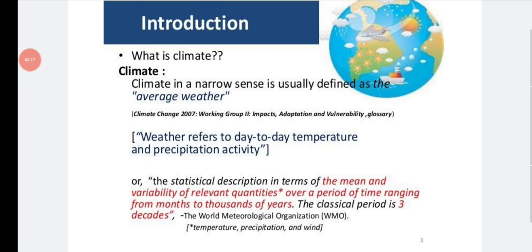Or the statistical description in terms of the mean and variability of relevant quantities over a period of time ranging from months to thousands of years. The classical period is three decades. So according to the World Meteorological Organization, they have given what is climate.